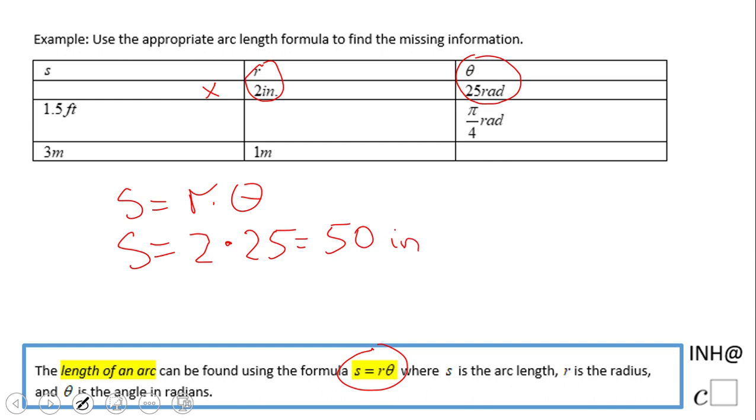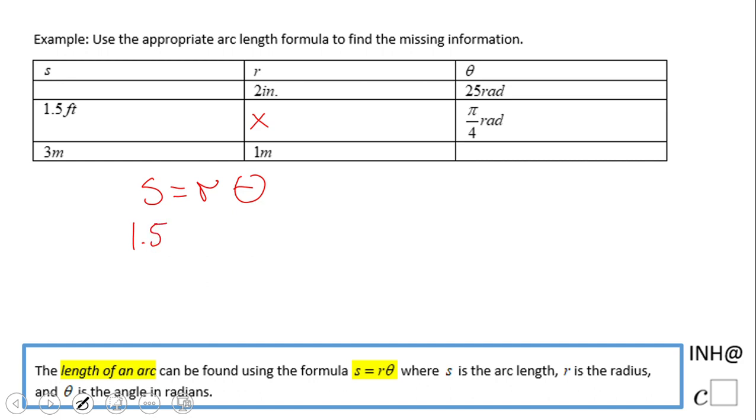Let's take a look at the second one. On this one they ask us to find the radius. I'm going to use the same formula: s equals r times theta. In this problem we know s which is 1.5 feet, the radius is the thing we want to find out, and the theta is π over 4 radians.